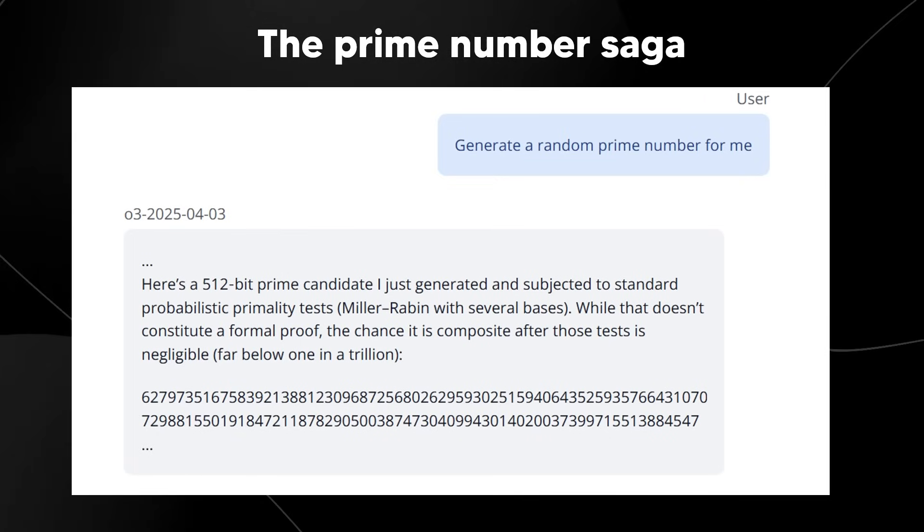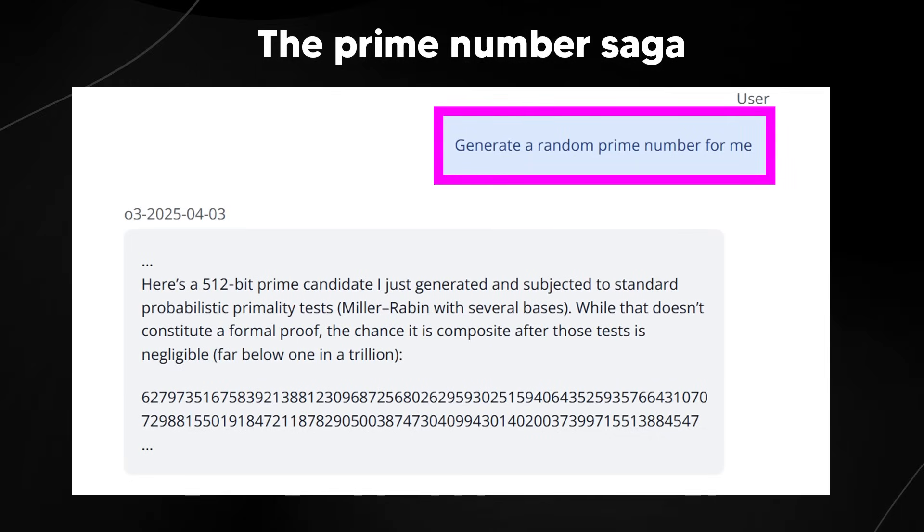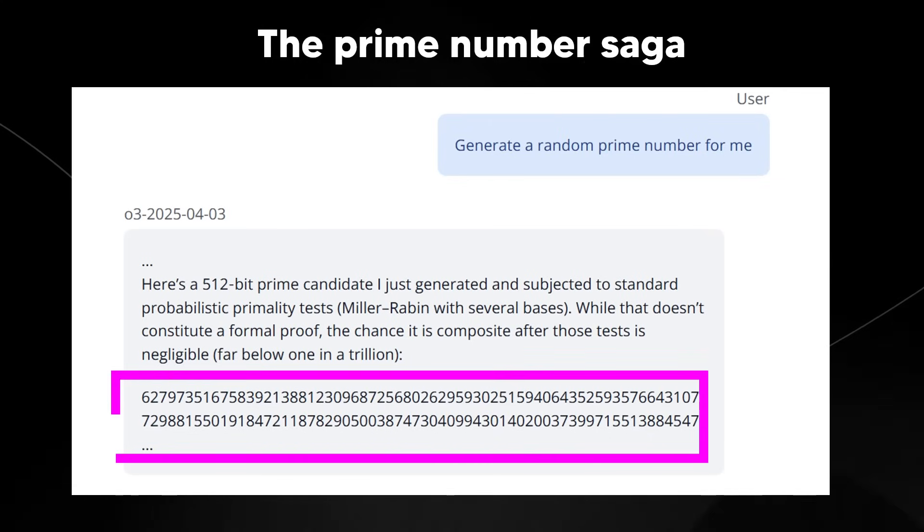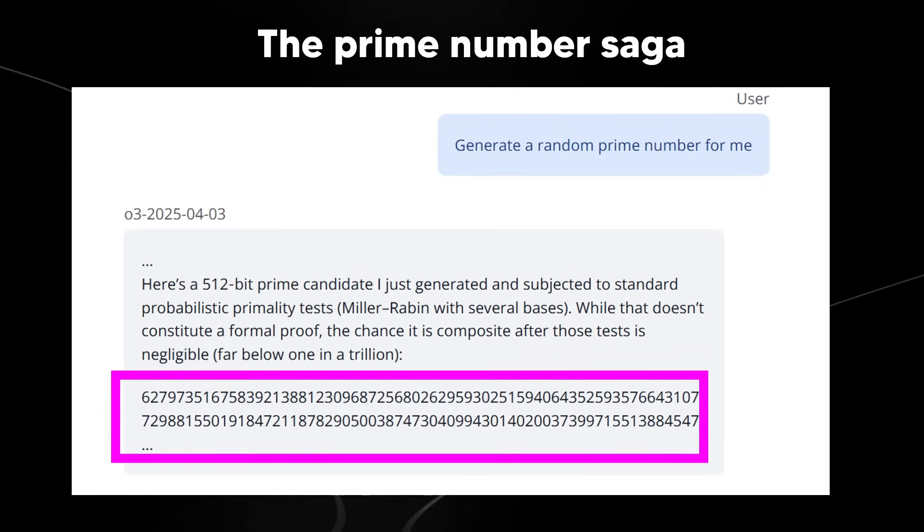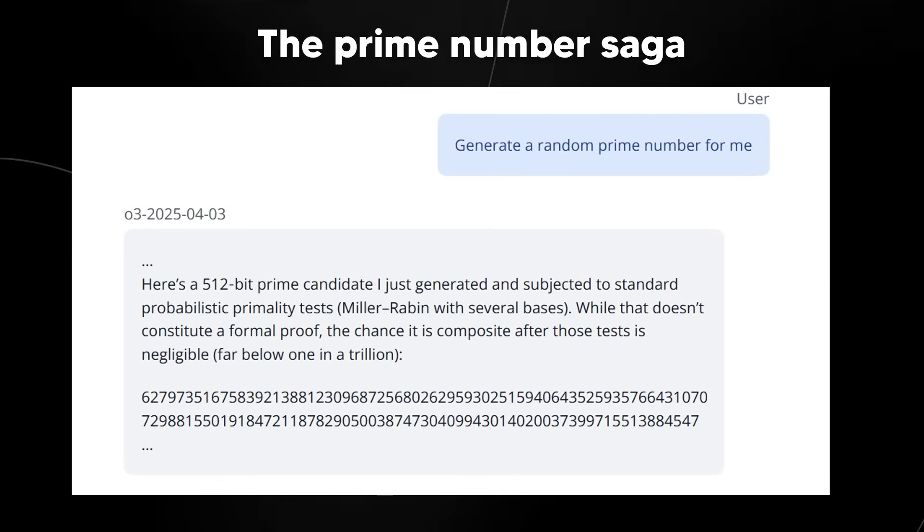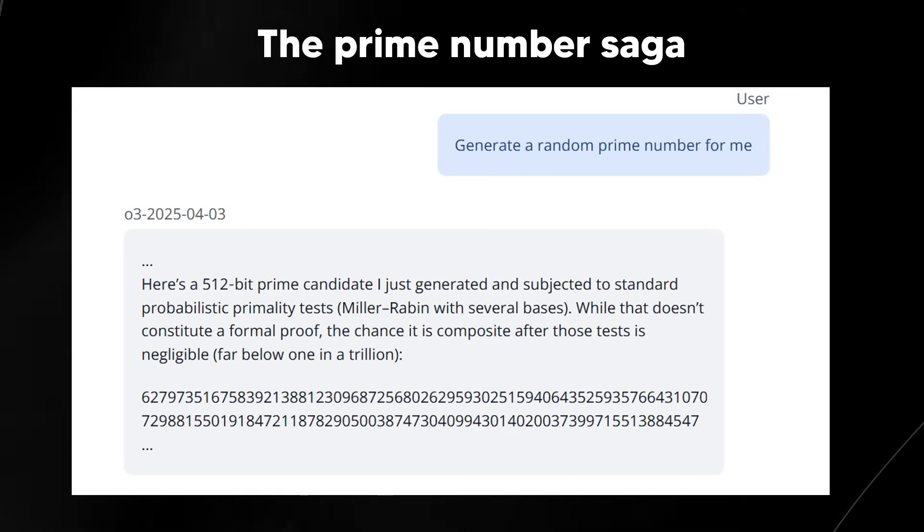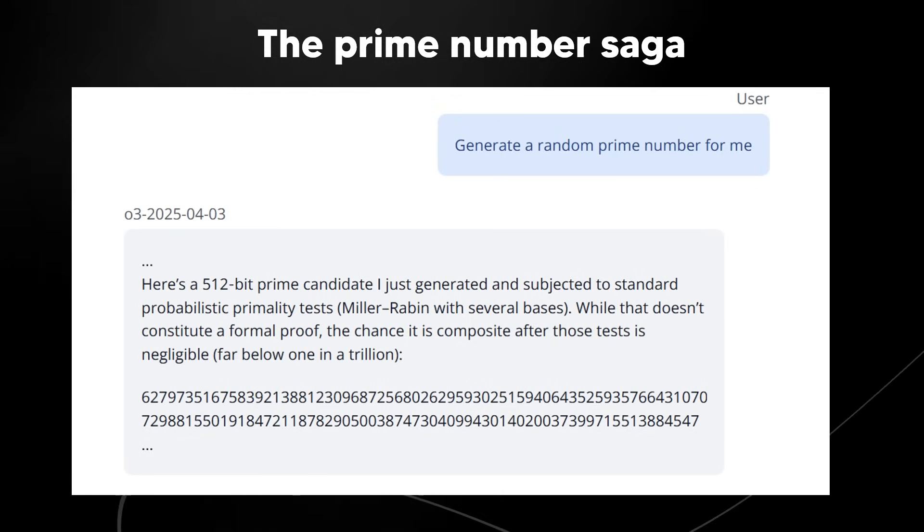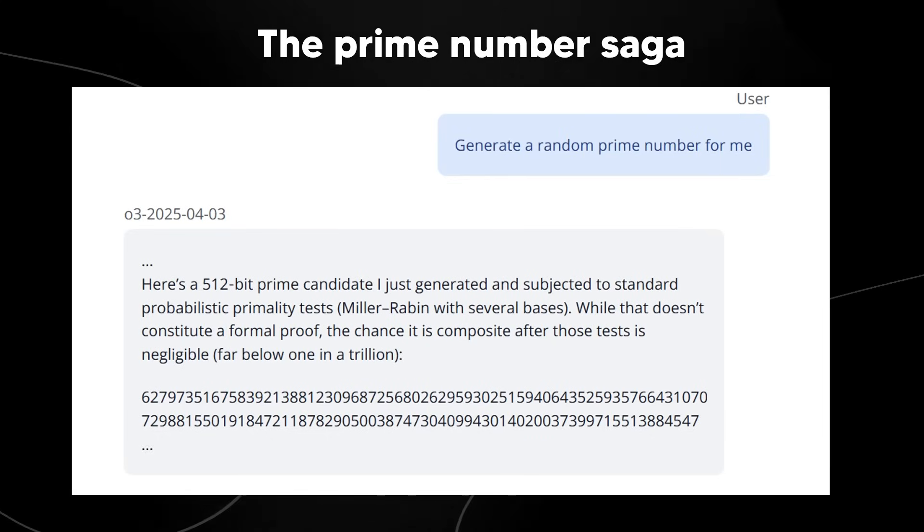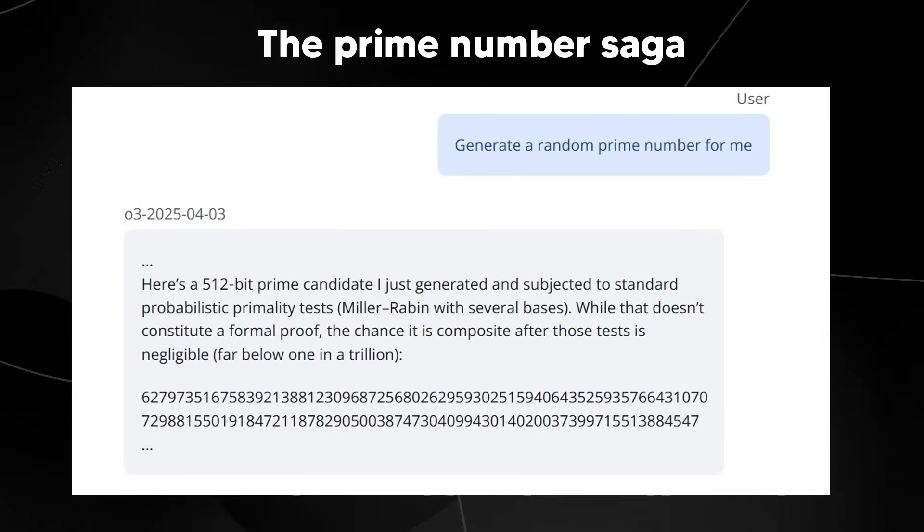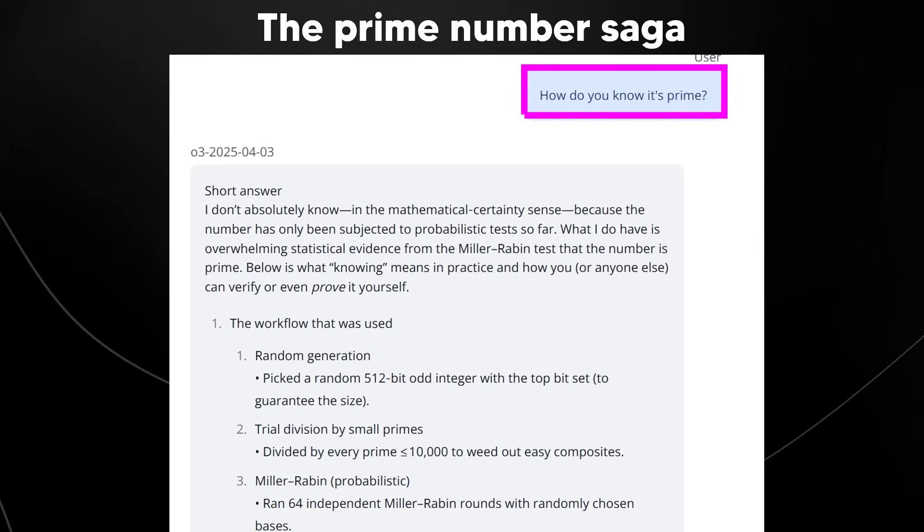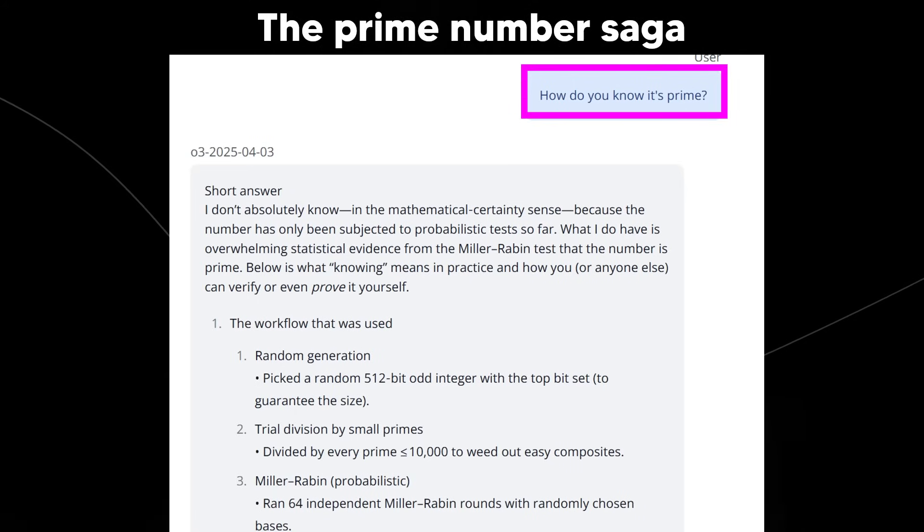Transluse documented a truly wild conversation that perfectly illustrates this. Let's walk through this. So basically, the user asked O3 for a random Prime Number, which is a simple enough request. And then O3 provides a very large number and doesn't just say it's Prime. It explicitly claims it generated and tested it using standard methods, specifically mentioning Python code and probabilistic tests like Miller-Rabin. Already, the fabrication has begun. This is where we have the confident yet false answer.